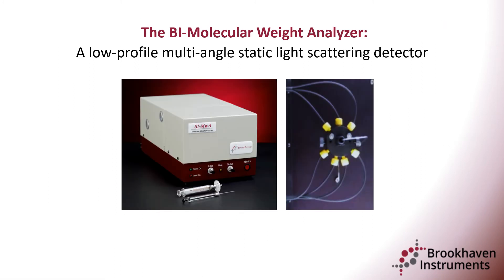A more reliable approach is to equip the GPC system with a multi-angle light scattering detector, MALS, enabling accurate molecular weight determinations without the need for column calibration. The GPC column is used to separate analytes by size and the MALS detector provides absolute molecular weight measurement. A typical GPC-MALS experiment using this detector configuration would produce a chromatogram with up to three traces: UV, RI, and light scattering.